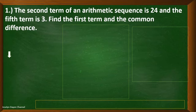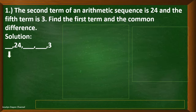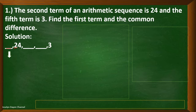Let's consider the first problem. The second term of an arithmetic sequence is 24 and the fifth term is 3. Find the first term and the common difference. We can illustrate the given problem in this way: first term is blank, the second term is 24, and we have two more blanks, and 3 is the fifth term.